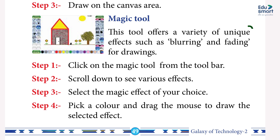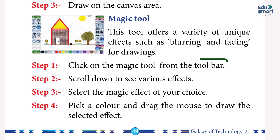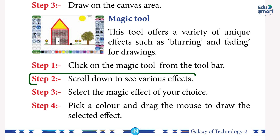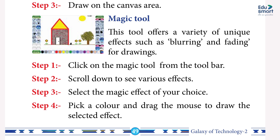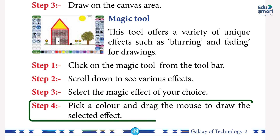Magic tool — this tool offers a variety of unique effects such as blurring and fading for drawings. Step 1: click on the Magic tool from the toolbar. Step 2: scroll down to see various effects. Step 3: select the magic effect of your choice. Step 4: pick a color and drag the mouse to draw the selected effect.